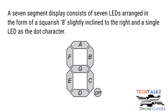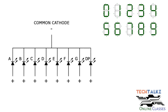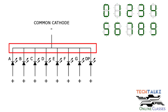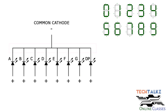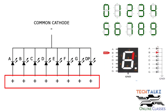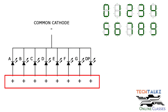There are two types: common cathode and common anode. In the common cathode type, the cathode of all LEDs are tied together to a single terminal, which is usually labelled as common (COM). The anode of all LEDs are left alone as individual input pins, labelled A to G, including the dot character.